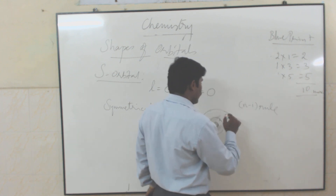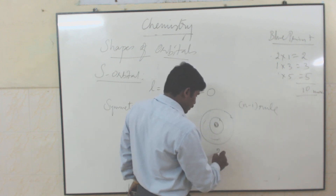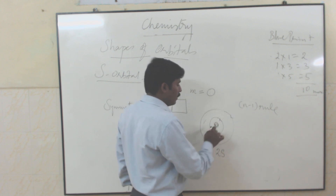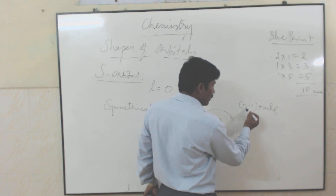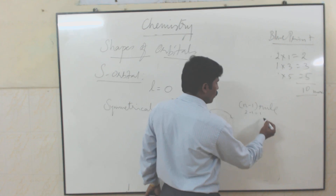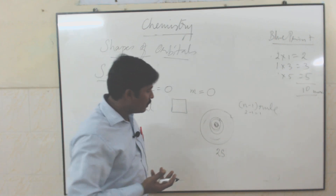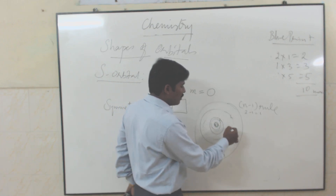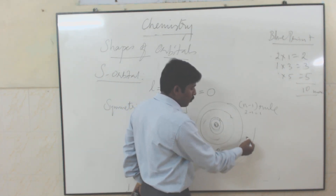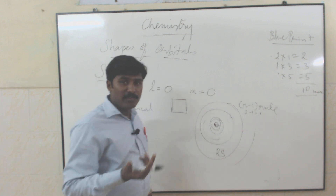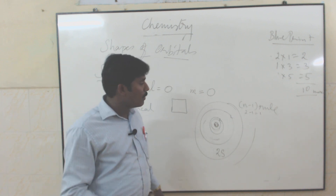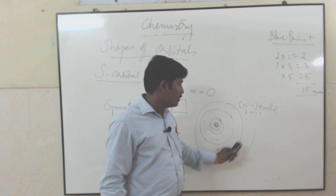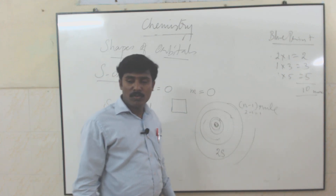For example, for a 2s orbital, n equals 2, so 2 minus 1 gives 1 node. For 3s, there are 2 nodes. For 4s, 3 nodes. For 5s, 4 nodes. Suppose it is 10s — then 9 nodes. The common formula for calculating nodes is n minus 1.